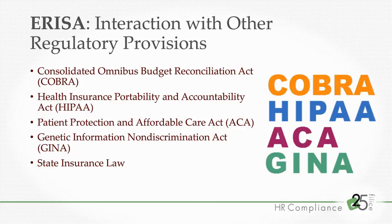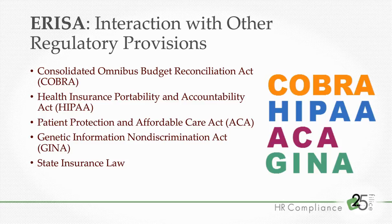ERISA interacts with other federal regulatory provisions, so ERISA compliance encompasses compliance with those other federal laws as well. These include the Consolidated Omnibus Budget Reconciliation Act (COBRA), which applies to employers with at least 20 employees; the Health Insurance Portability and Accountability Act; the Patient Protection and Affordable Care Act; and the Genetic Information Non-Discrimination Act. Also to keep in mind for fully insured plans is state insurance law. ERISA operates separate and apart from state insurance law, so the two operate in tandem but never conflict — though state insurance law is another layer of compliance that fully insured health plans need to keep an eye on.